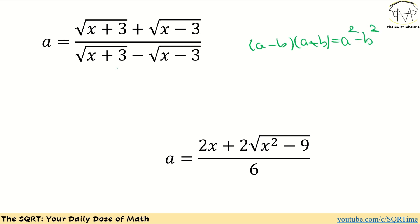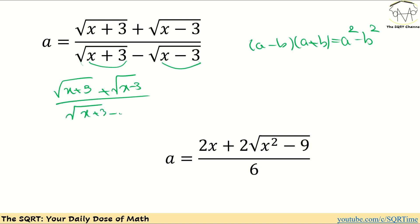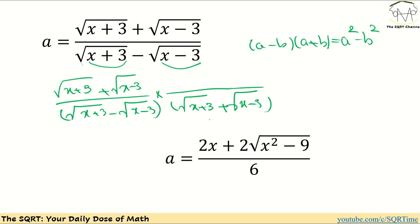Here I want to remove the radicals. We have √(x+3) and √(x-3). If we multiply (this term minus this term), the x terms are removed and we are left with 3 minus negative 3. So I'm going to multiply the fraction by (√(x+3) + √(x-3)) / (√(x+3) - √(x-3)), which is basically 1, but multiplying will lead to useful simplification.